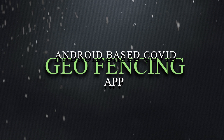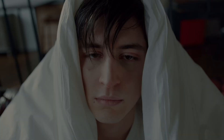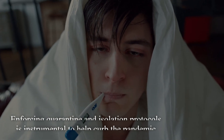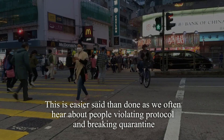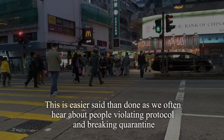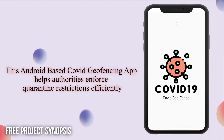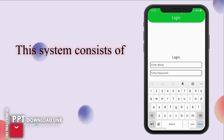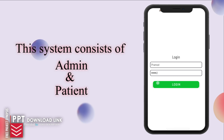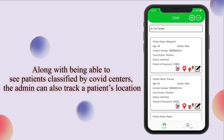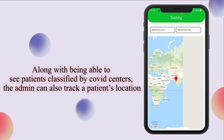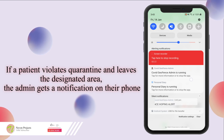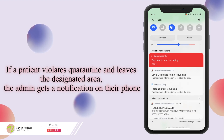Android-based COVID Geofencing App. Enforcing quarantine and isolation protocols is instrumental to help curb the pandemic. This is easier said than done, as we often hear about people violating protocol and breaking quarantine. This Android-based COVID geofencing app helps authorities enforce quarantine restrictions efficiently. The system consists of admin and patient. Along with being able to see patients classified by COVID centers, the admin can also track a patient's location. If a patient violates quarantine and leaves the designated area, the admin gets a notification on their phone.